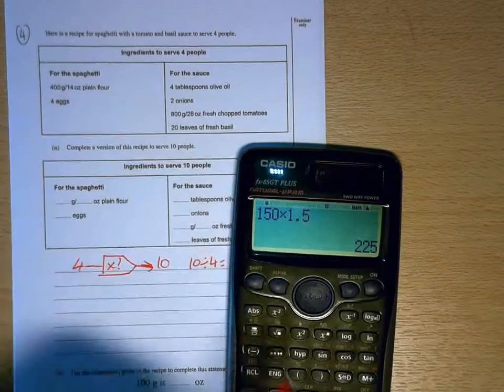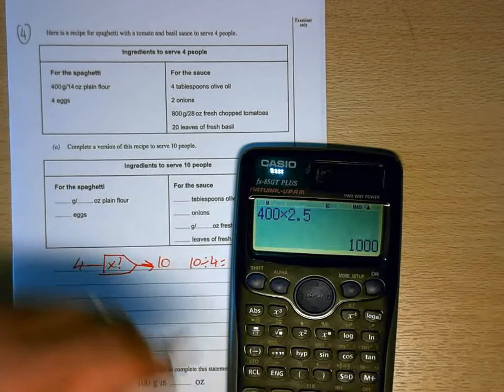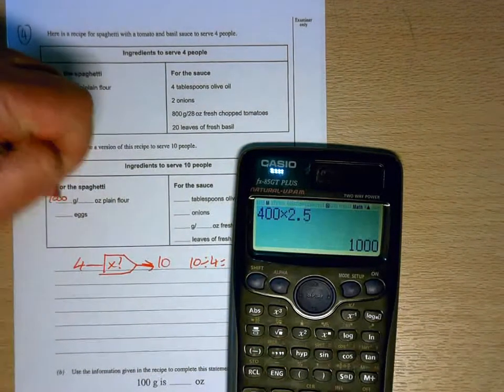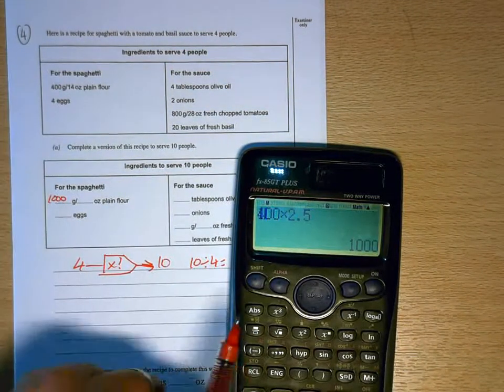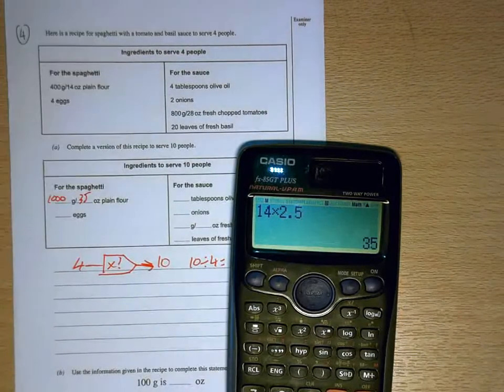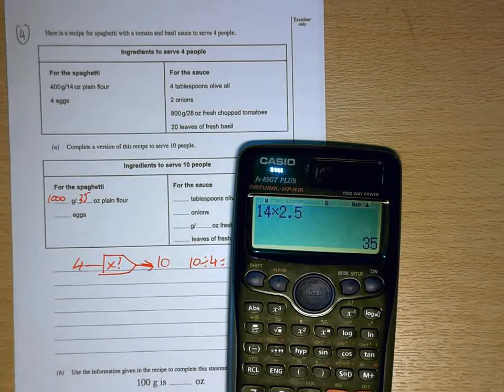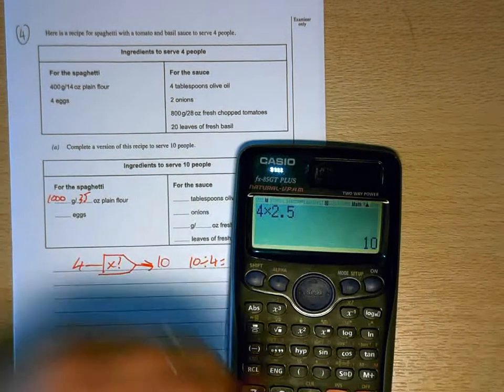So we've got 400 first of all. So that becomes 1,000 grams of plain flour. It's going to be 14 times 2.5, which will be 35 ounces of plain flour. 4 eggs times 2.5, 10 eggs.